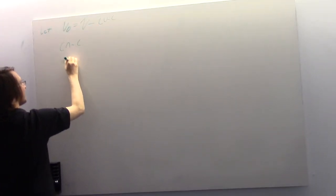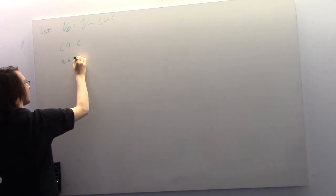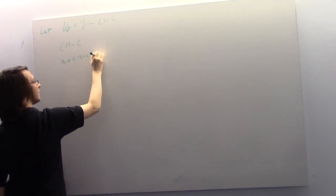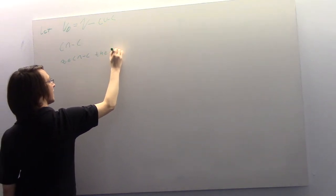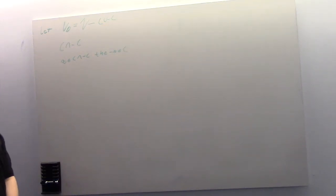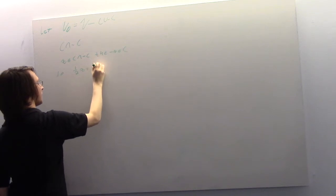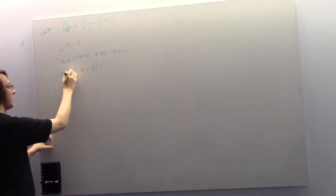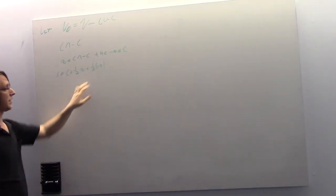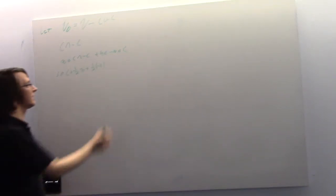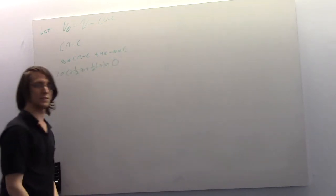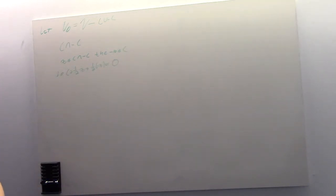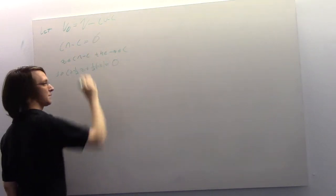If X is an element of C intersect minus C, then minus X is an element of C. So one-half X plus one-half times minus X must also be an element of C. But this is a fancy way of writing zero. So C intersect minus C is actually the empty set.